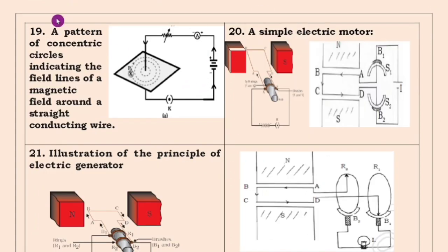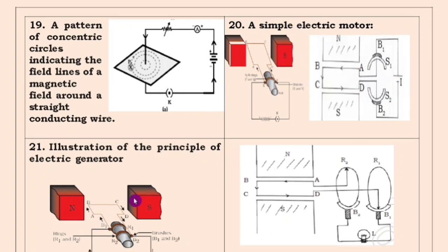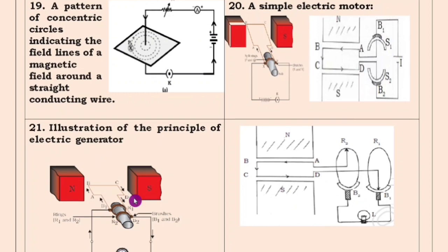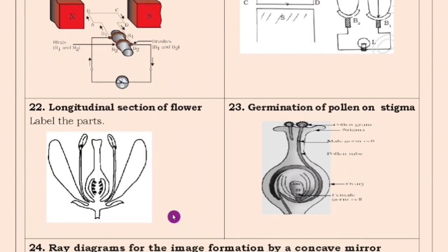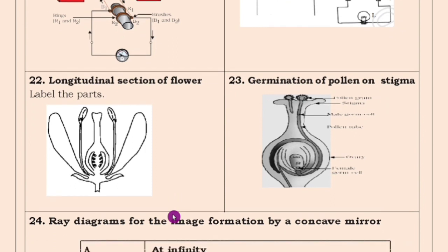The next one is a pattern of concentric circles indicating the field lines of a magnetic field around a straight conducting wire. You have to learn this one. Next are electric motor and electric generator — these two diagrams are also very, very important and you have to learn them. Also, I left two biology diagrams: the longitudinal section of a flower and germination of pollen on a stigma. Practice these two diagrams as well.